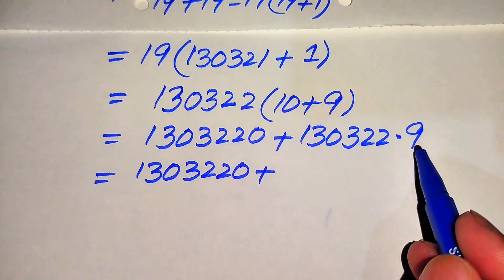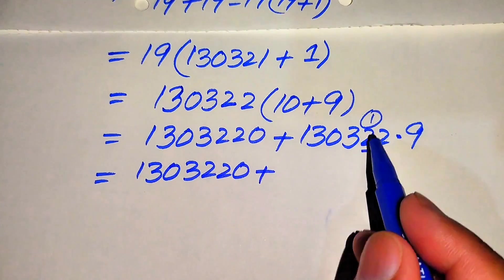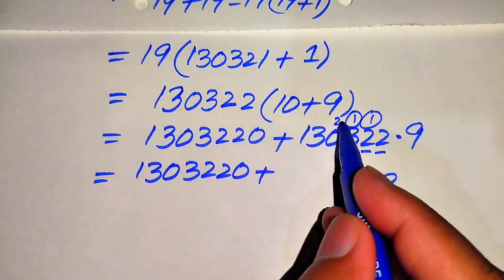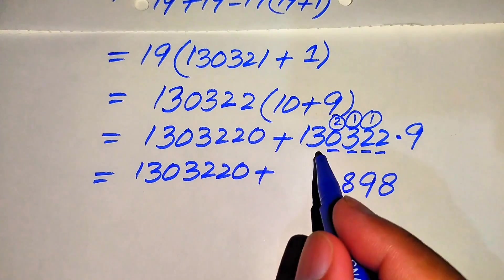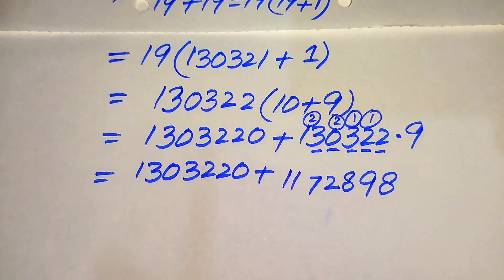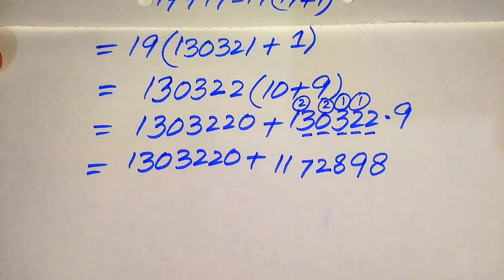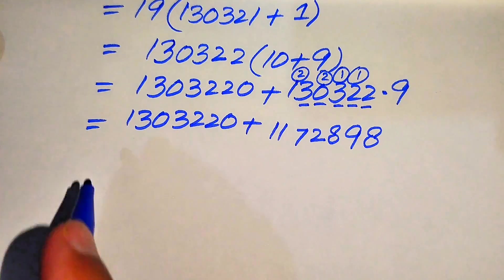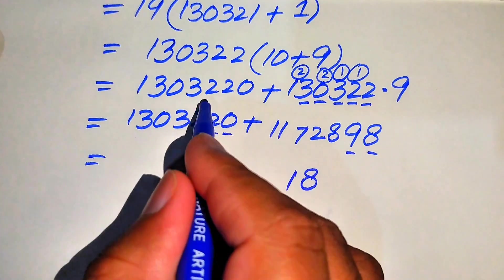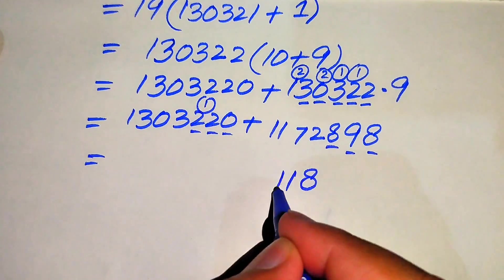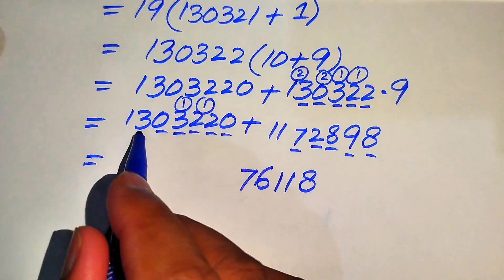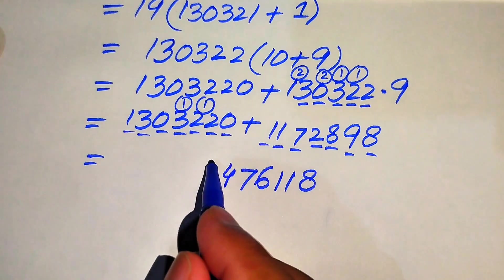Multiplying 130322 by 9: 9 times 2 is 18 write 8 carry 1; 9 times 2 is 18 plus 1 is 19 write 9 carry 1; 9 times 3 is 27 plus 1 is 28 write 8 carry 2; 9 times 0 is 0 plus 2 is 2; 9 times 3 is 27 write 7 carry 2; 9 times 1 is 9 plus 2 is 11. This gives 1172898. Now summing 1303220 plus 1172898: 0+8=8; 2+9=11 write 1 carry 1; 2+8+1=11 write 1 carry 1; 3+2+1=6; 0+7=7; 3+1=4; 1+1=2. So the final answer is 2,476,118.